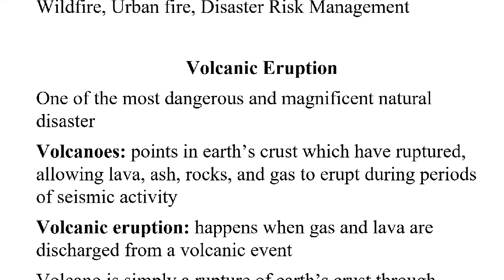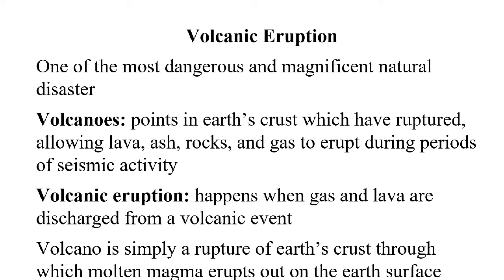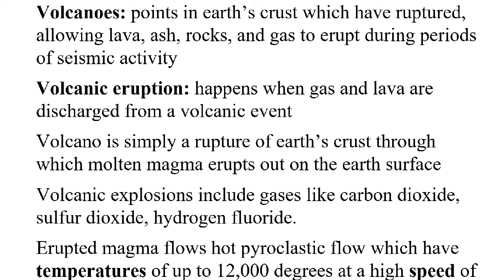In the definition of volcanoes, you can write: points in Earth's crust which have ruptured, allowing lava, ash, rocks and gas to erupt during periods of seismic activity. Seismic activity refers to any kind of movement in the Earth producing seismic waves. A volcanic eruption happens when gas and lava are discharged from a volcanic vent.